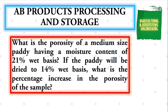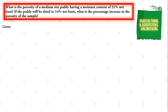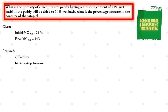To begin with, let us first identify the given in the problem. We have an initial moisture content in wet basis of 21%, and a final moisture content in wet basis of 14%. The requirements in the problem are: first, the porosity; and second, the percentage increase if the sample is dried to 14%. After identifying the given and the requirements, we begin solving the values.